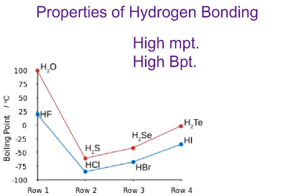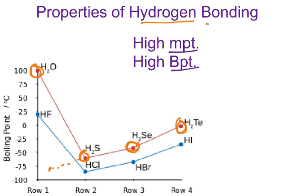One property of hydrogen bonding we discussed in class is the increase in melting and boiling points. Looking at this graph for group 16 elements — TE, SE, S — the progression shows decreasing boiling points as mass decreases. So H₂O should extrapolate to somewhere very low on the graph. But from experience, we know water boils at 100°C, which is unusually high compared to others in group 16, and that's due primarily to hydrogen bonding.